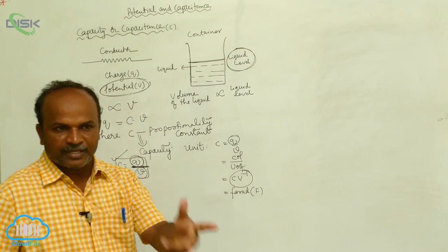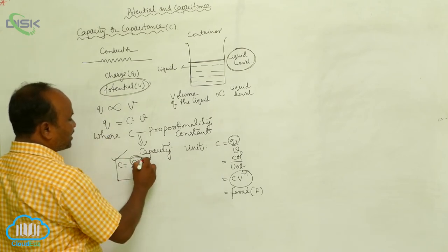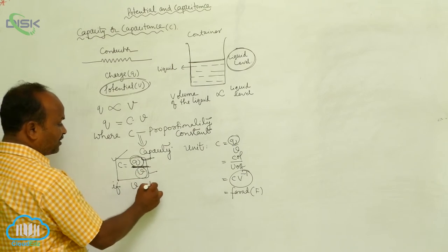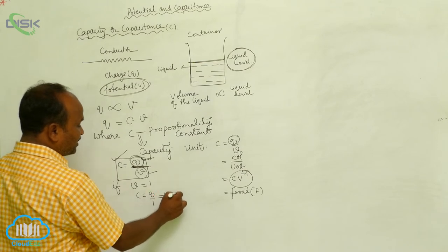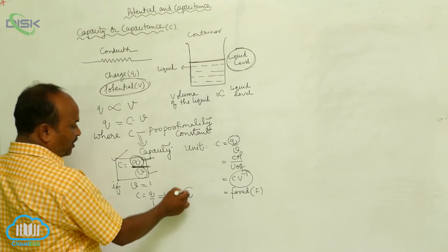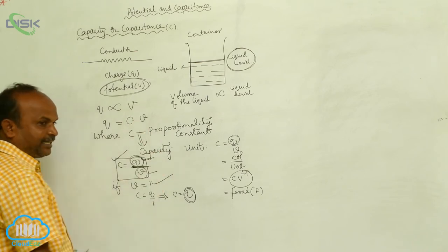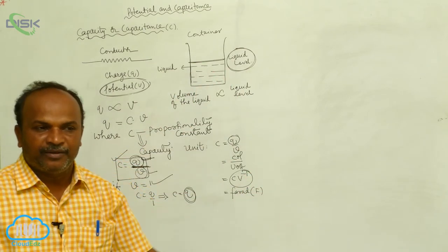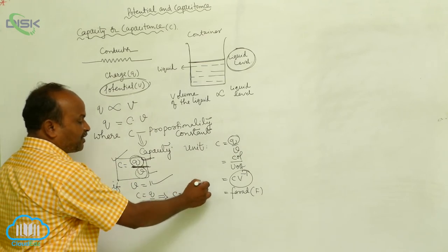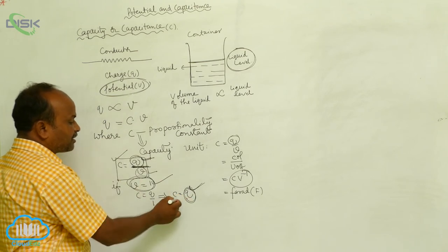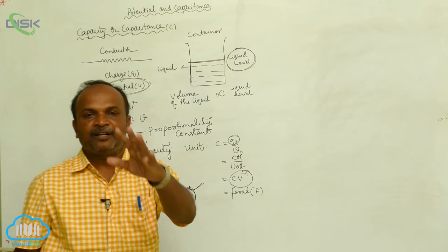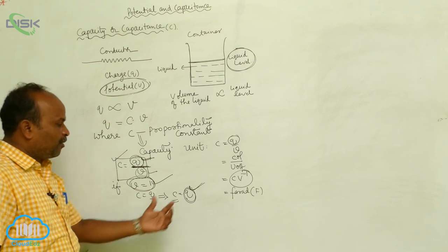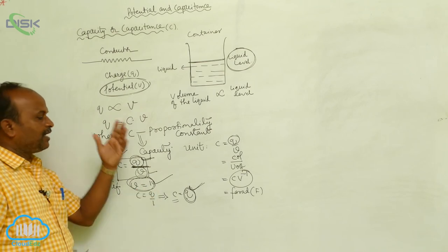Capacity may be defined in two ways. First, the ratio between the charge on the conductor and its potential is called capacity. Or, if V equals 1, then C equals Q. So the second definition: the amount of charge required for a conductor to raise its potential by unity is called the capacity of a conductor.